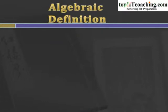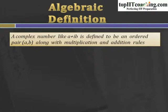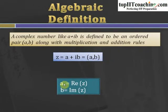Let's go through the algebraic definition of a complex number. A complex number a plus iota b is defined to be an ordered pair (A, B) along with multiplication and addition rules. Here A represents the real part and B represents the imaginary part. So Z equals A plus iota B can be represented as the ordered pair (A, B), where A is the real part and B is the imaginary part of the complex number Z.